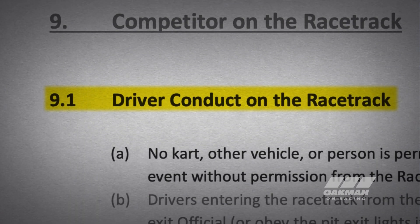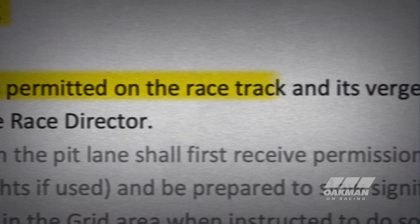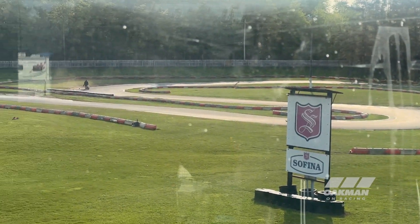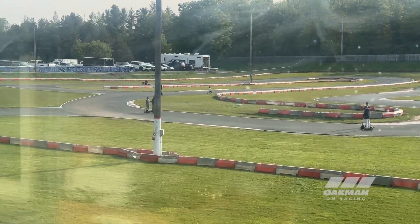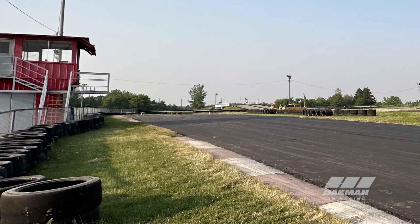Let's have a look at the Kart Stars rulebook 2023, section 9.1, driver conduct on the racetrack. The future action states: no kart, other vehicle, or person is permitted on the racetrack and its verges at any time during an event without permission from the race director. For this rule, you really don't need definitions — it's describing the racetrack and its verges, meaning the property surrounding the racetrack. A reasonable person is going to understand what a racetrack is and the area surrounding it. At racetracks you'll have fences surrounding the track surface, and you'd have to cut through restricted areas to actually reach the track.